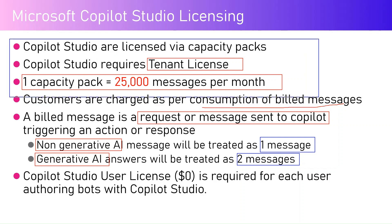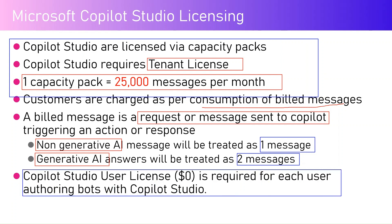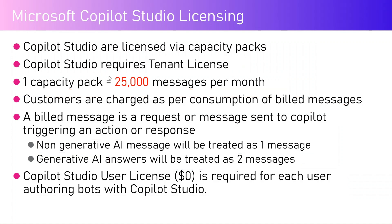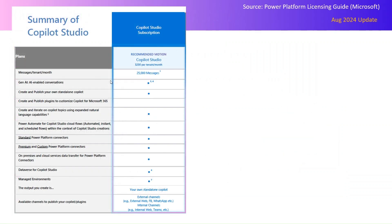For consumption, you need a Copilot Studio capacity pack at a tenant level. But for each user, you also need something called a Copilot Studio user license, which is a zero-dollar license. This is currently required for each user authoring bots within Copilot Studio. These are the two things required if you want to build a copilot within Copilot Studio.